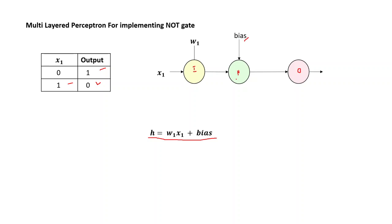We directly plug in the bias into your hidden layer. Let us consider that the value of W1 is minus one, and the value of your bias is one. Now let's see what happens. Let's take the first case where the value of X1 is zero. So the value of your H will be W1 into X1, that is zero, plus bias, that is plus one, and that will be equals to one.